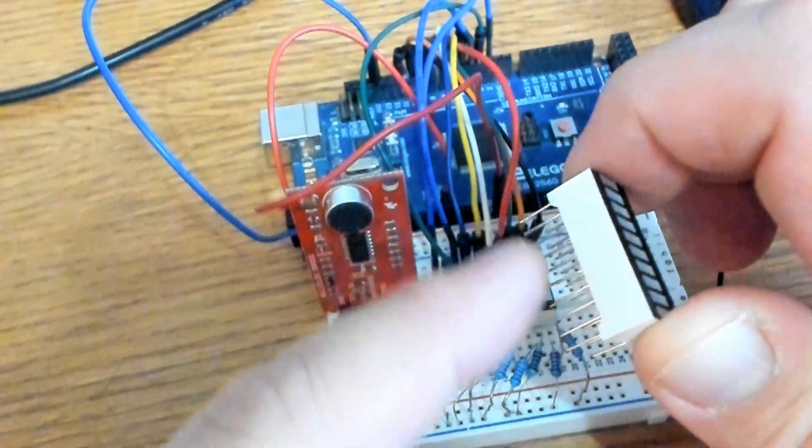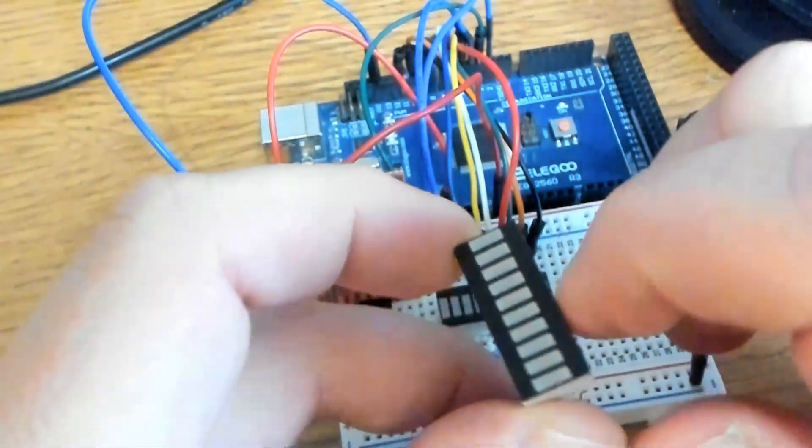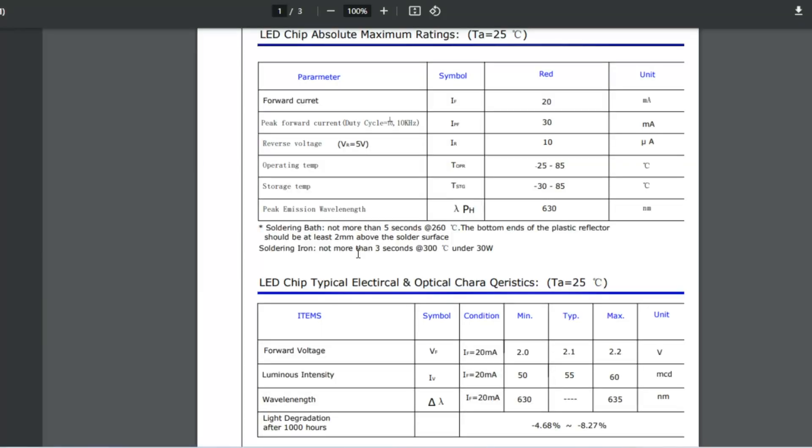Where on one side you have the anode and the other side you have the cathode. And if you scroll down here just a little bit you can see another point of interest is the forward current of 20 milliamp and the forward voltage of 2 to 2.2 volt.